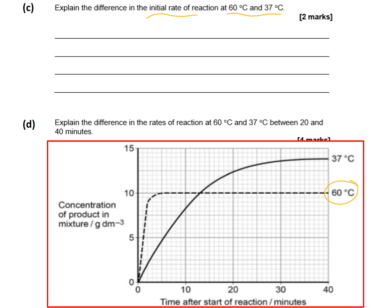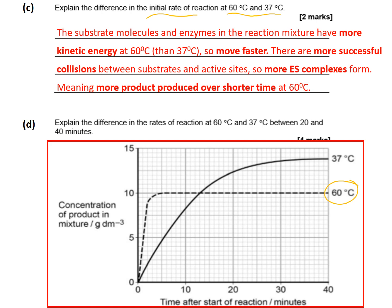Looking at the mark scheme: molecules have more kinetic energy at 60°C compared to 37°C — it's important to include that comparison. Molecules move faster, leading to more successful collisions between substrates and the active sites of enzymes. Therefore more ES complexes form and more product is produced over a shorter time at 60°C. The mark points are: more kinetic energy, molecules move faster, more successful collisions, more ES complexes, and therefore more product in a shorter time.